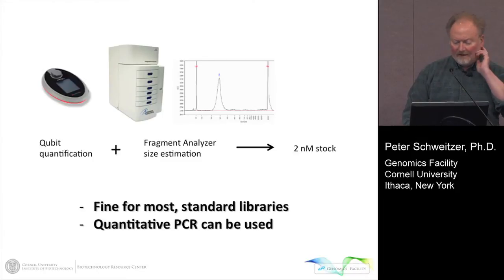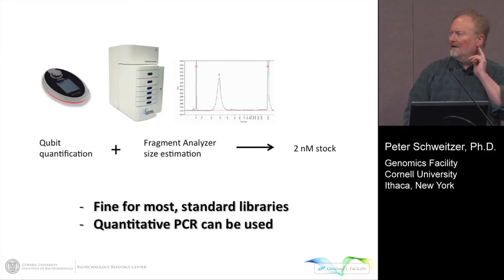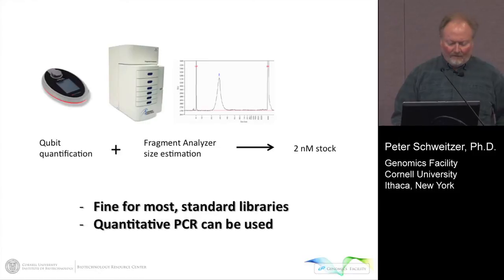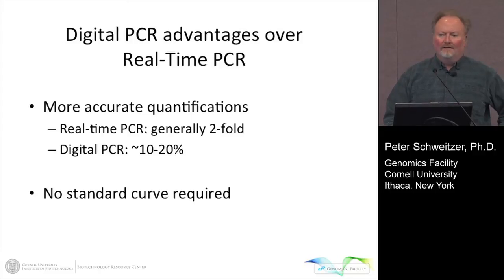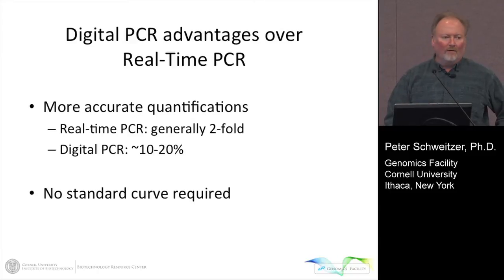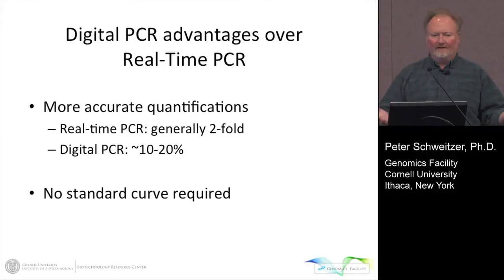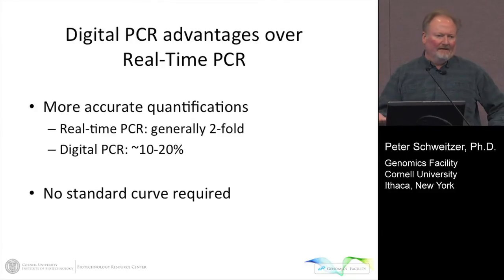Typically for standard libraries, we quantify with the Qubit and get an average molecular weight based on an electropherogram from the fragment analyzer, then adjust everything to a two nanomolar stock. This is fine for most standard libraries, and you can use qPCR, but digital PCR has distinct advantages. First is more accuracy — qPCR generally gives about two-fold accuracy for quantitation based on Ct values, whereas digital PCR is down around 10 to 20% accuracy. And the nice thing is that digital PCR doesn't require a standard curve.